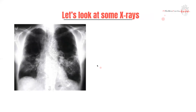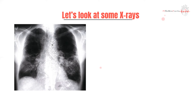Looking at some x-rays — adopting a systematic approach and looking at what's really relevant — we can notice some changes in the mid-zones bilaterally. You can see some increased reticular opacities present bilaterally. You can also see wire-like markings across the chest — those are metallic wires used to close up the sternum after open chest surgery, meaning this person has had a sternotomy.